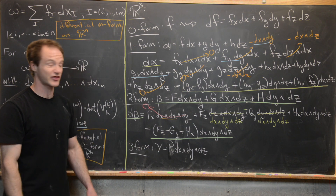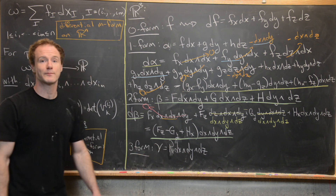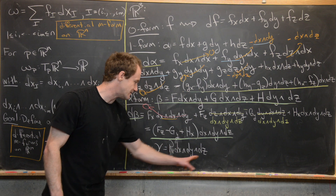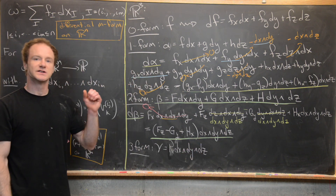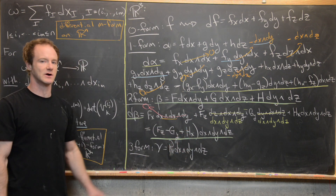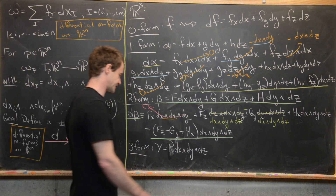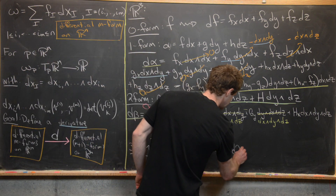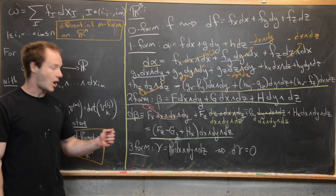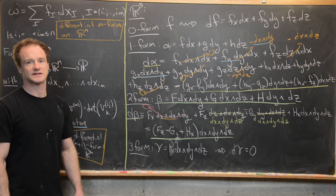Finally, for a 3-form gamma on R³, every partial derivative wedged onto dx∧dy∧dz produces a repeated factor, which is zero by anticommutativity — the derivative with respect to x gives dx wedged onto the existing dx∧dy∧dz, and similarly for y and z. So d(gamma) = 0. The exterior derivative of any 3-form on R³ is zero.